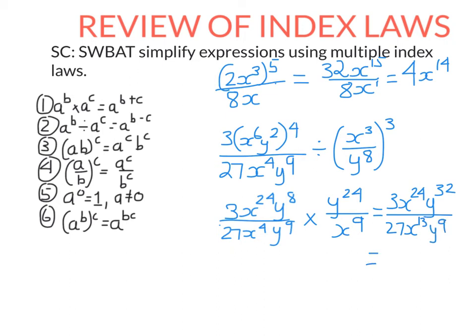So 3 over 27 simplifies to 1 over 9. x to the power of 24 divide x to the power of 13 gives me x to the power of 11. And y to the power of 32 divide y to the power of 9. Keep the same base and subtract the powers. How easy is that?